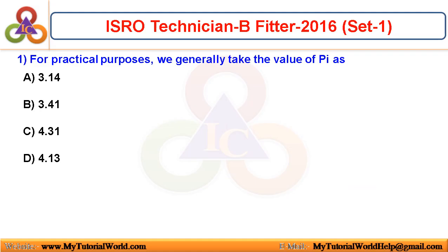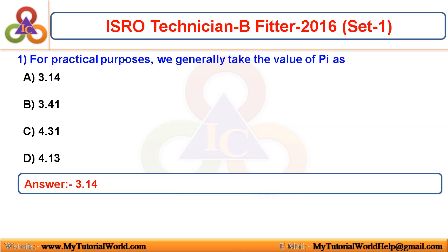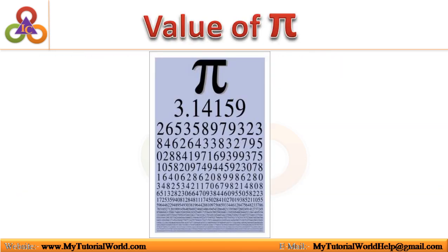For practical purposes, we generally take the value of pi as? The answer is 3.14. Pi is an irrational number, meaning it has an unlimited number of decimal places. Normally for calculation purposes, we take the value of pi as 3.14159.